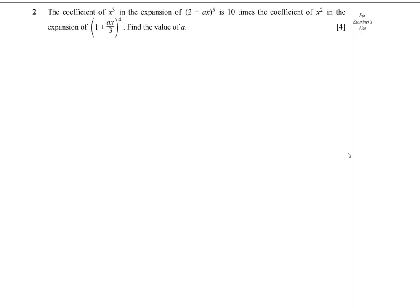This problem is from binomial expansion. In this question, it has been told that the coefficient of the x cubed term in the expansion of (2 + ax)^5 is 10 times the coefficient of the x squared term in the expansion of (1 + ax/3)^4. In both expansions, we have an unknown constant a, and we have to find the value of a.